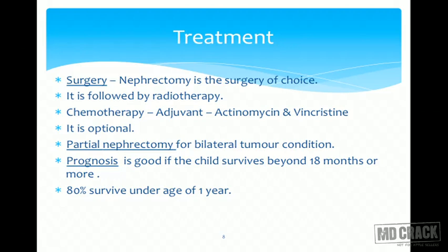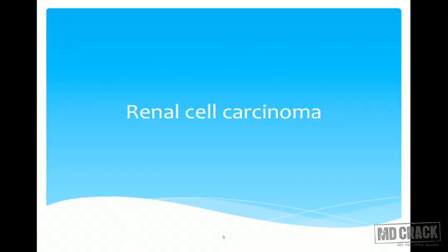80% survive under the age of 1 year. If the child survives and is 4 years old, it means the tumor has been totally extirpated and the patient will not have another Wilms Tumor, because it originates from embryonic nephrogenic tissue. As the child grows, the embryonic tissue will be converted into adult tissue and there will be no recurrence of Wilms Tumor.